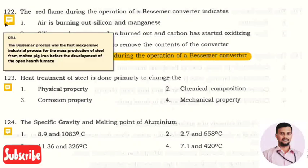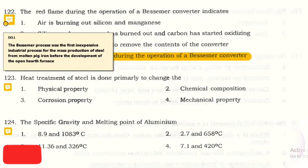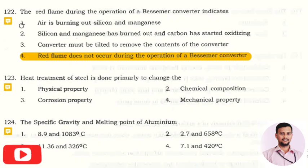So what is this Bessemer process? The Bessemer process was the first inexpensive industrial process for the mass production of steel from molten pig iron before the development of open hearth furnace. During this process, a yellowish golden flame is observed. So in a Bessemer converter, there is no red flame indication.